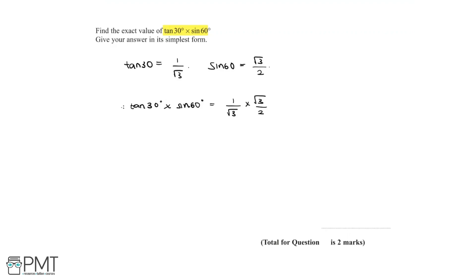1 multiplied by root 3 is equal to root 3, and 2 multiplied by root 3 is equal to 2 root 3. And so 1 over root 3 multiplied by root 3 over 2 is equal to root 3 over 2 root 3.